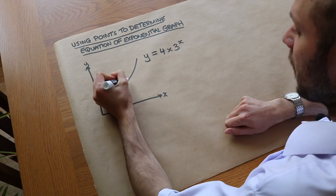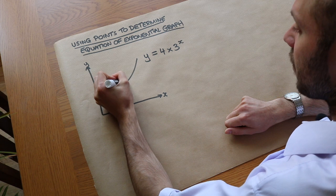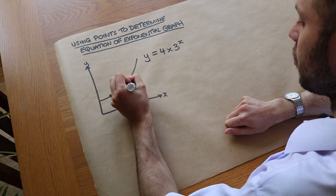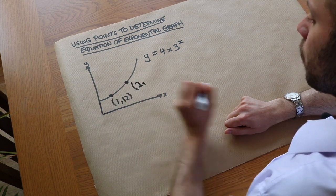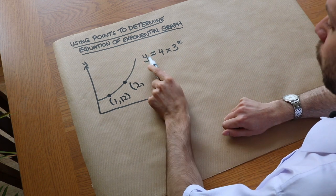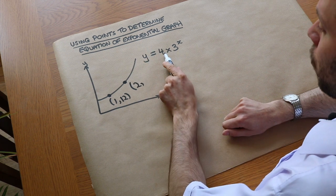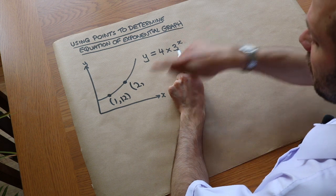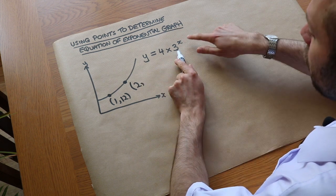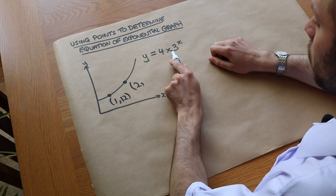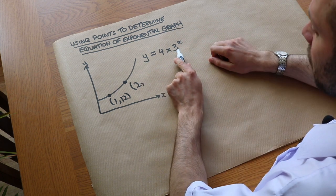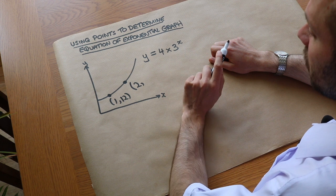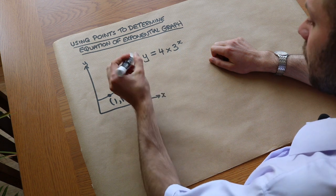Let's pick another value of x. If x equals 2, then y equals 4 times 3 to the power of 2, which is 4 times 9, giving y equals 36.